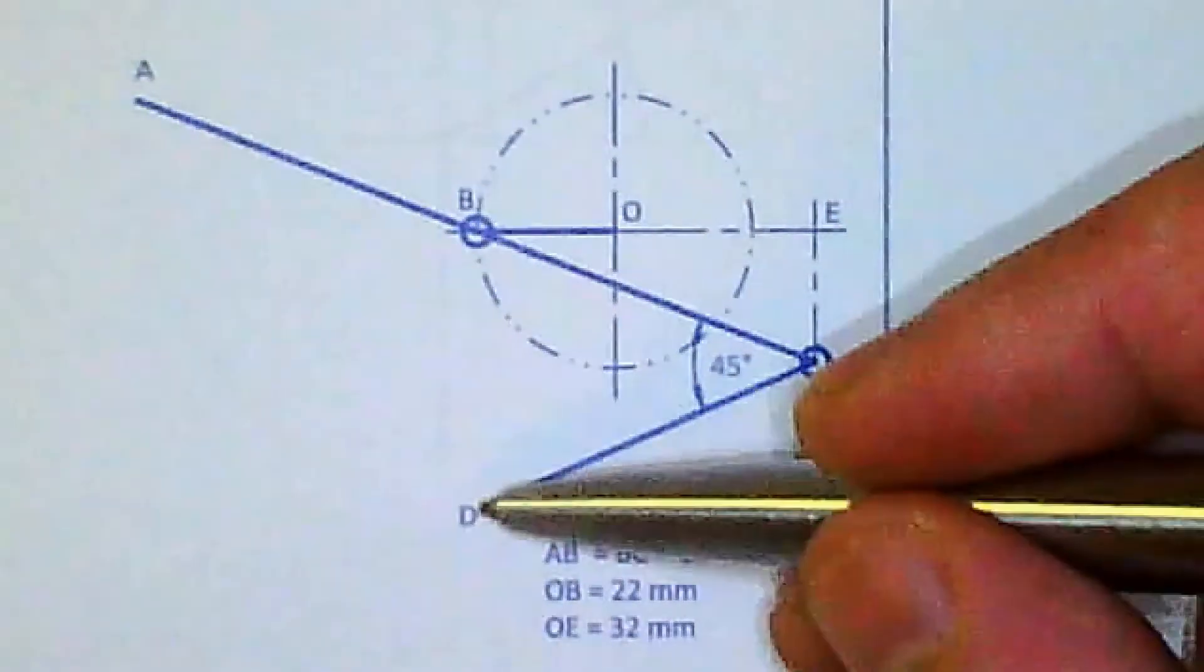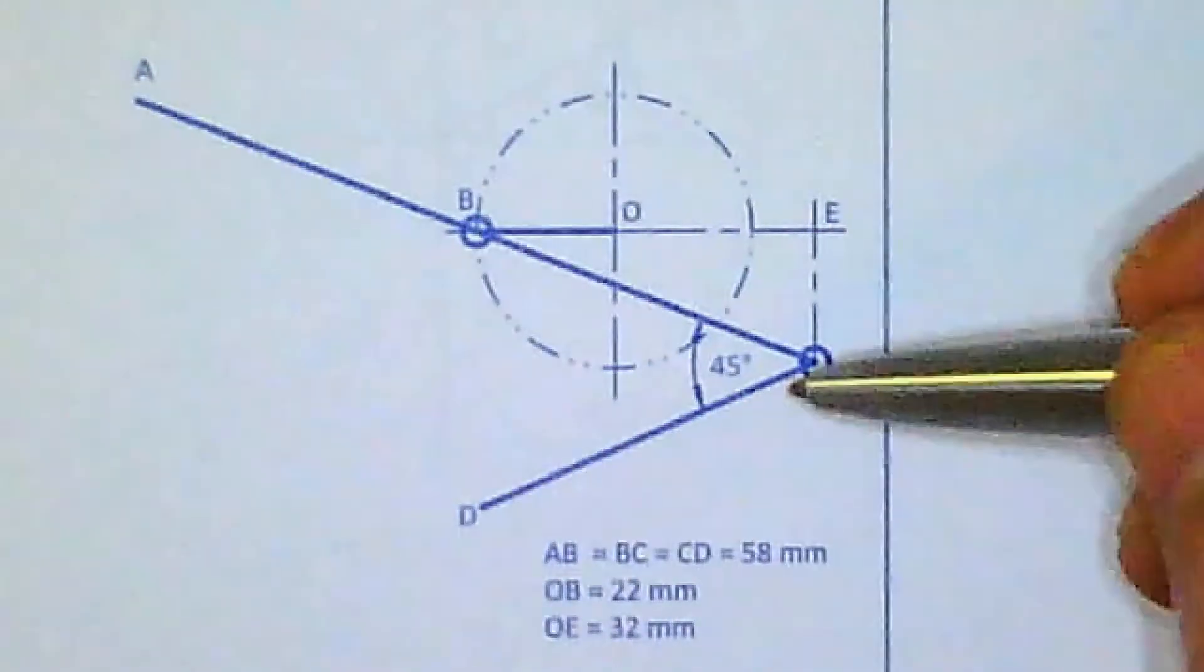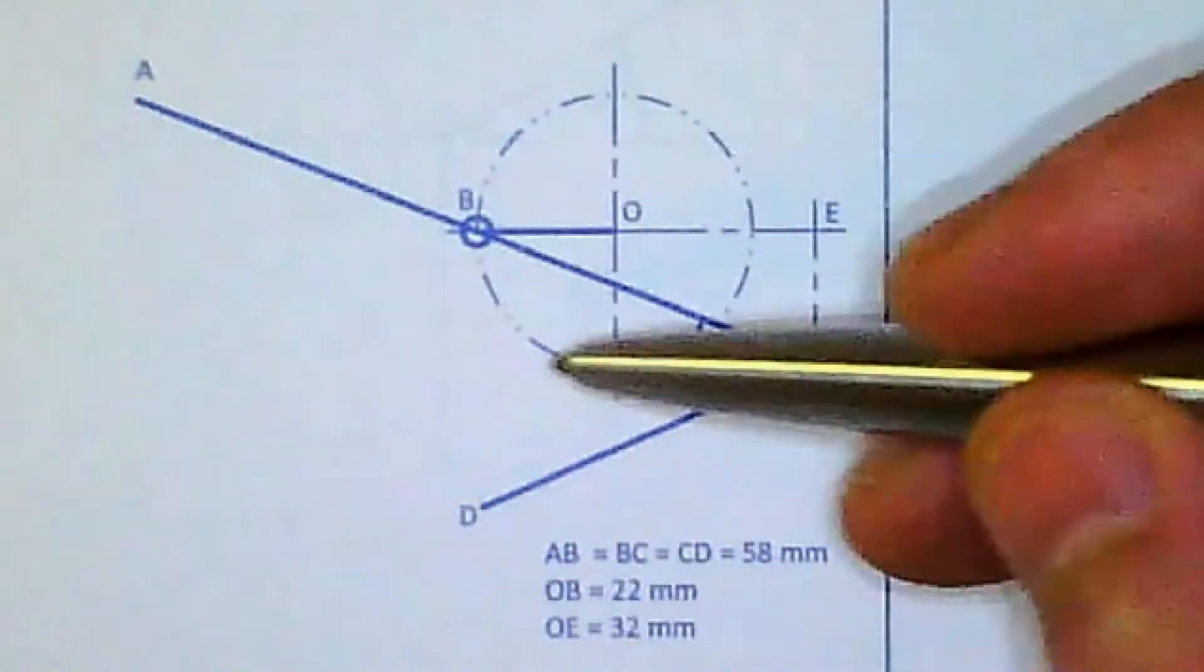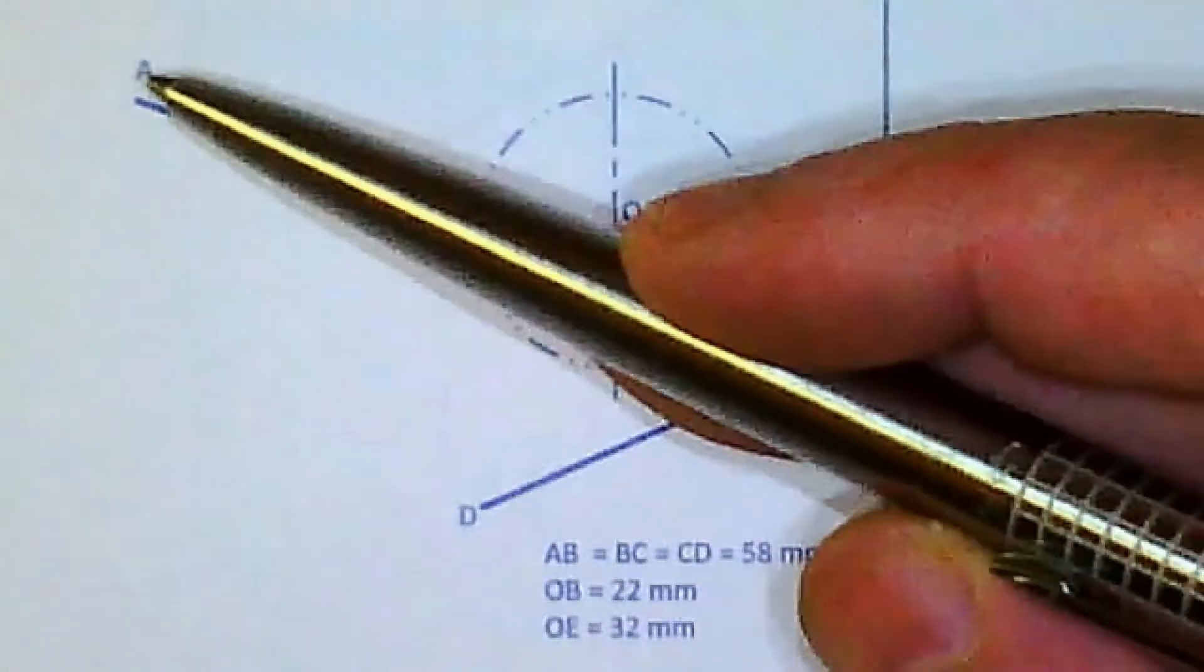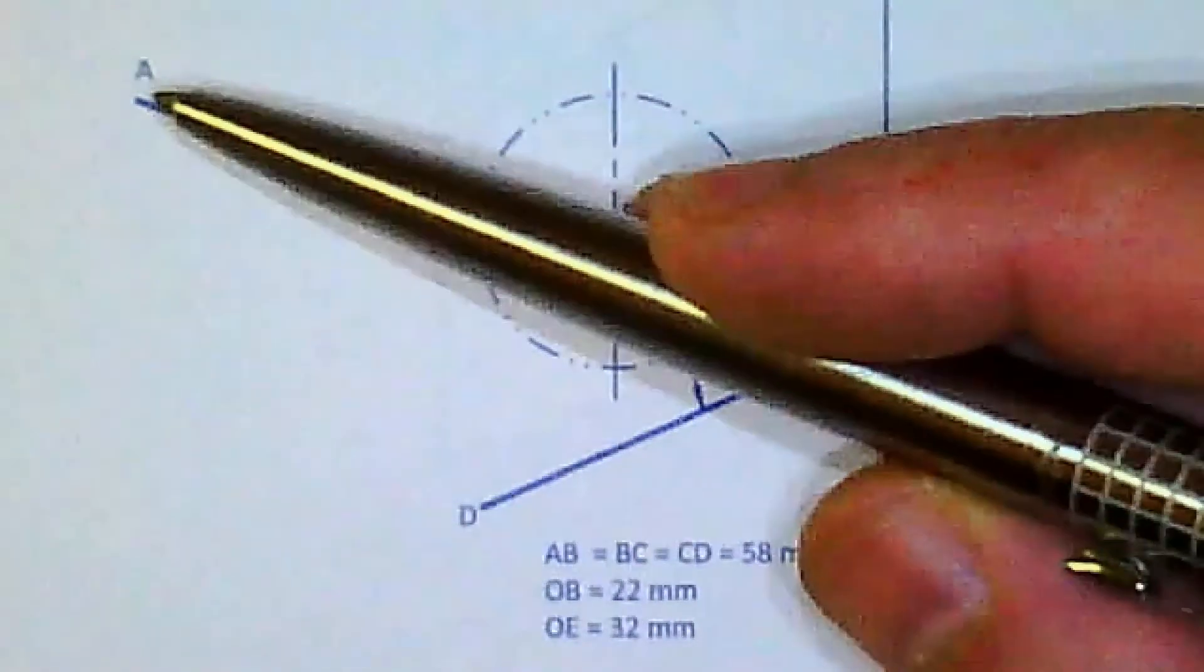So point D is a fixed pivot point, it can rotate but cannot move. Point C is going to oscillate around D. Point B is going to go around the circle, and A is going to be free to move. So A is also the locus path that we have to find.